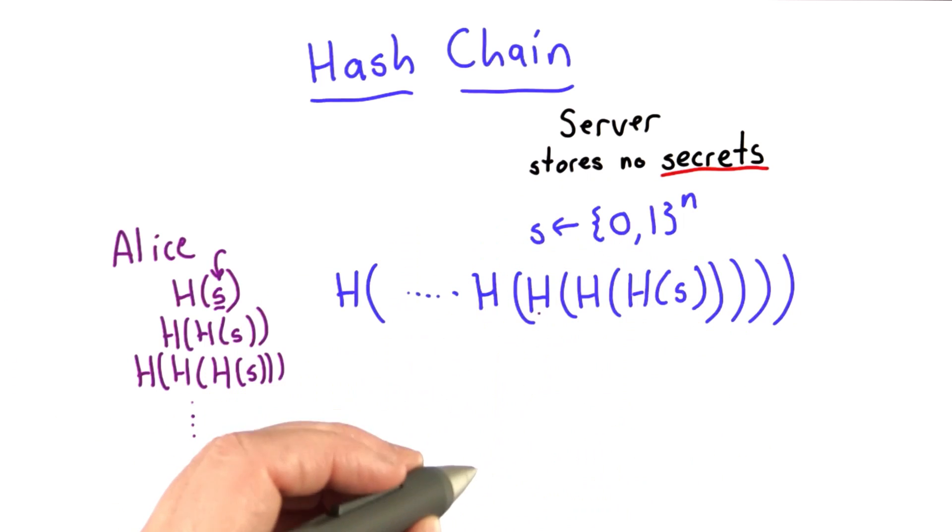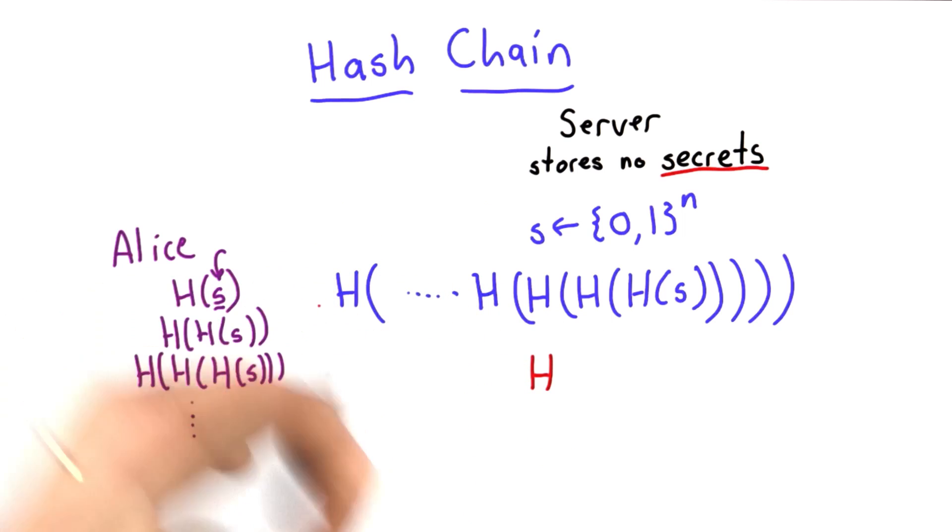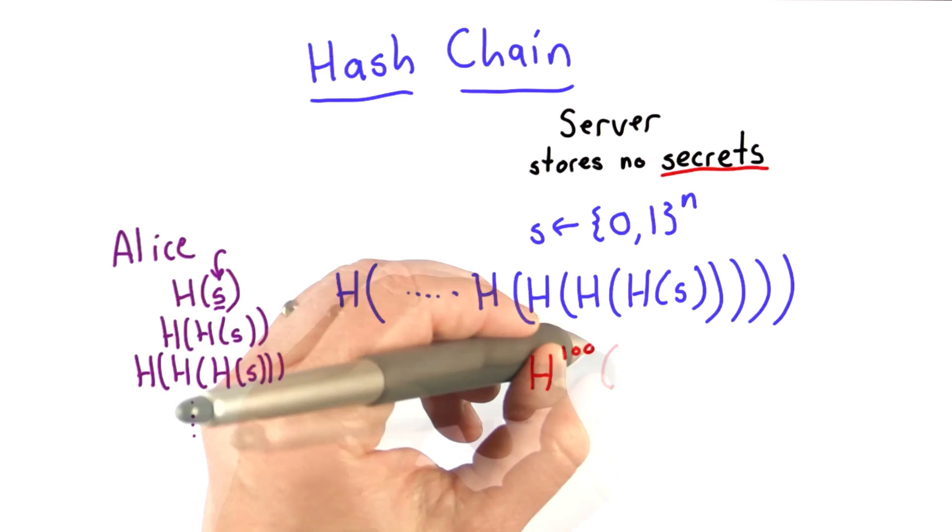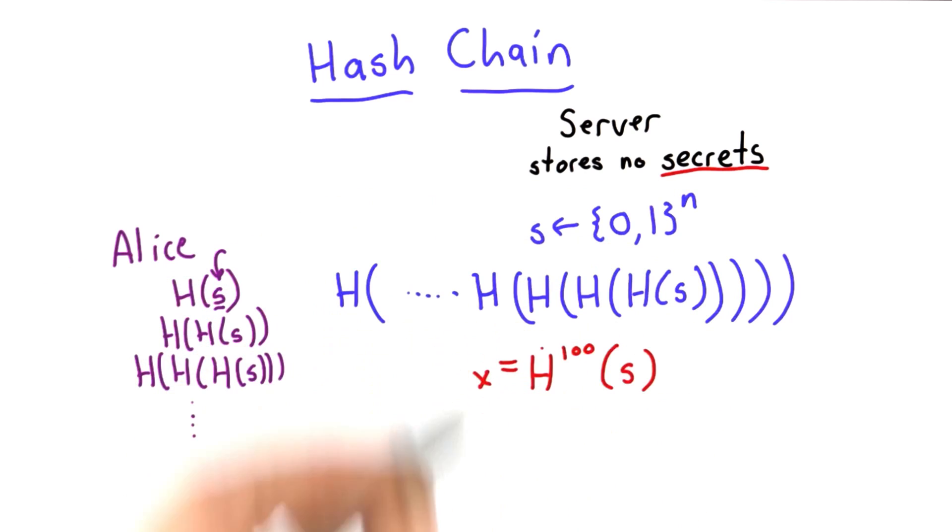The server only stores one thing. The only thing the server stores is the last value in this hash chain. So let's suppose we did this 100 times. This is the value the server would store, and that's the only value stored by the server.